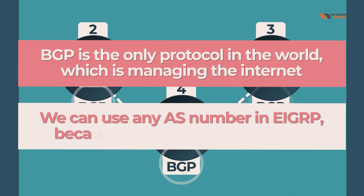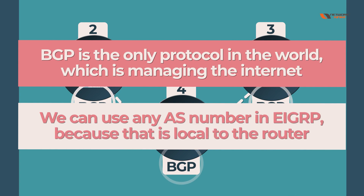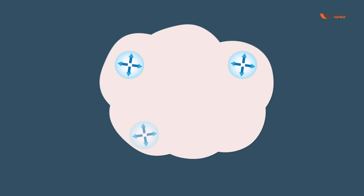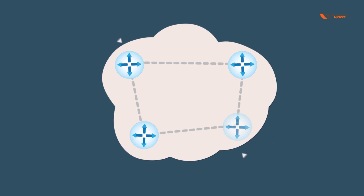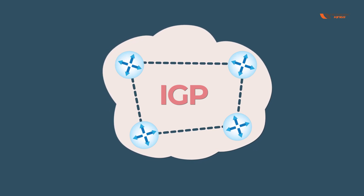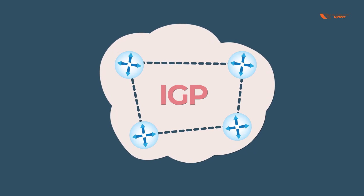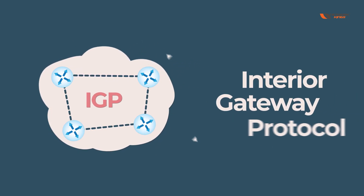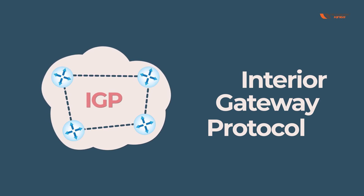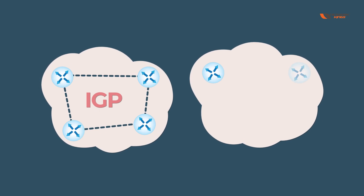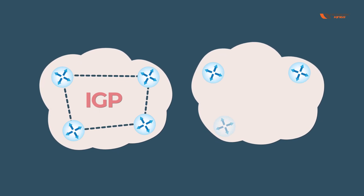In EIGRP, we can use any AS number because it is local to the router. When we connect multiple routers inside a company, those routers run protocols which are called IGP — Interior Gateway Protocols. Each company runs IGP protocols inside their own network.